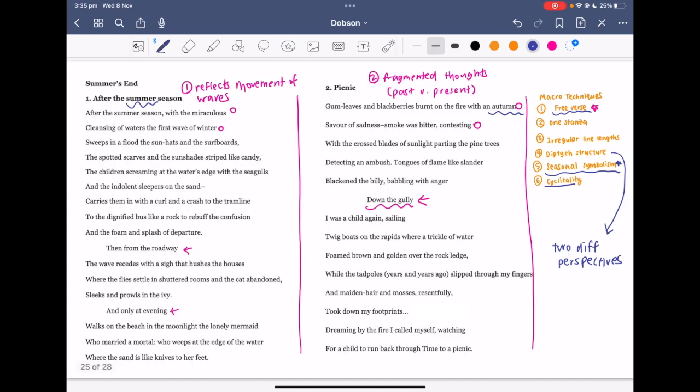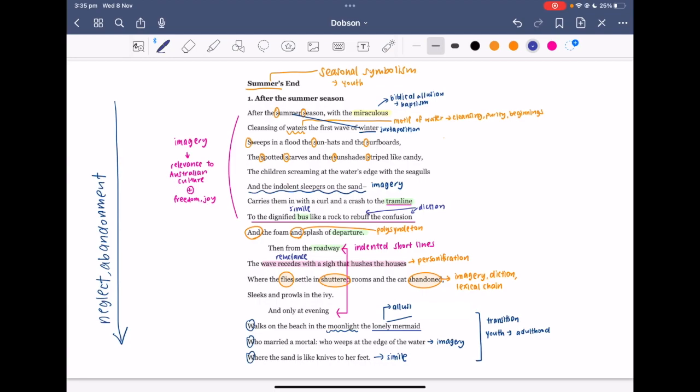The final one is cyclicality. And this one we'll touch on when we go through picnic in a little bit more detail. Now, let's unpack the poem one by one. Now, after the summer season initially captures the joy of childhood innocence, but proceeds to deal with the idea of departing or having to move on. So I'll write that down for you. To this idea of joy, to this idea of departing.